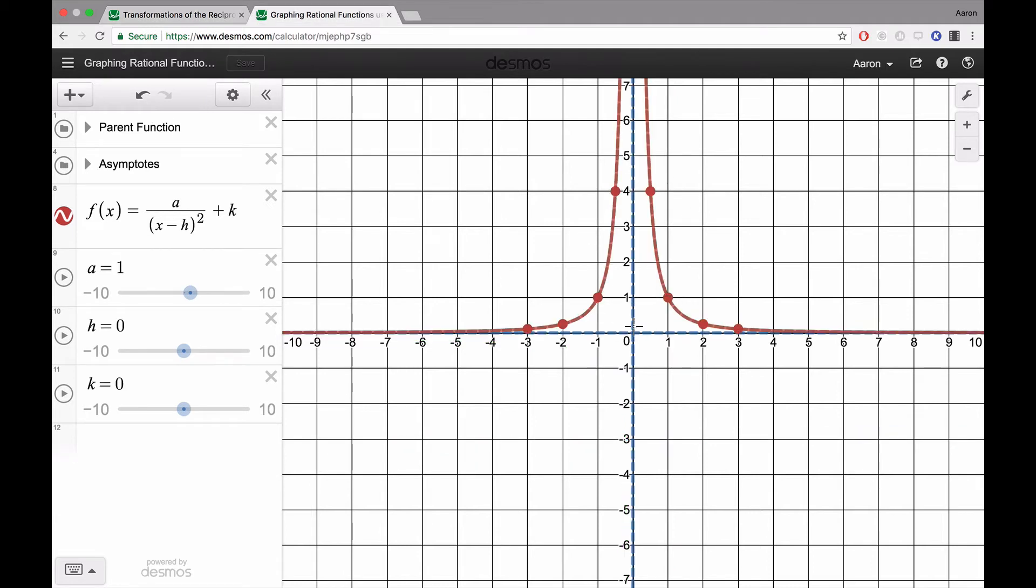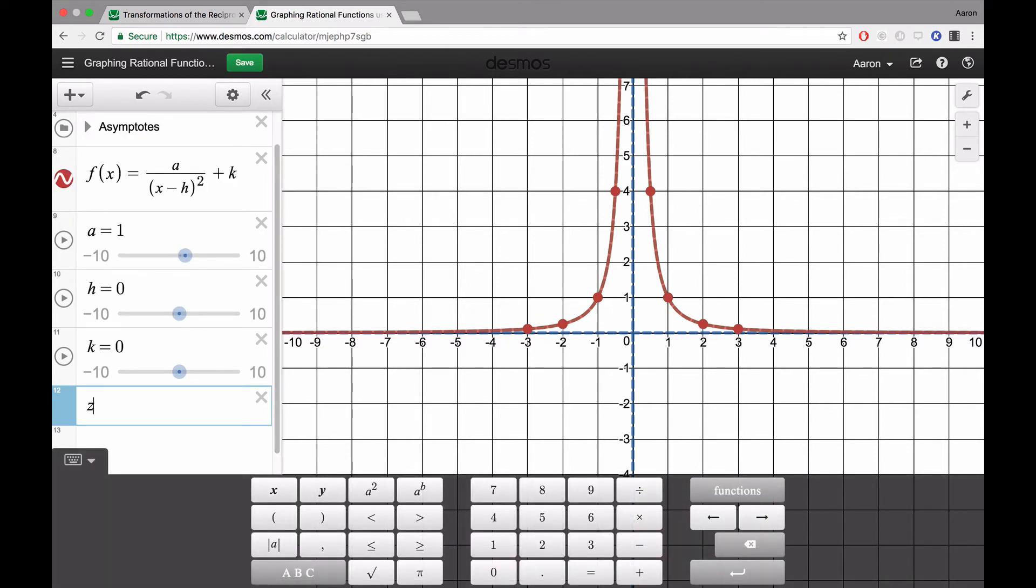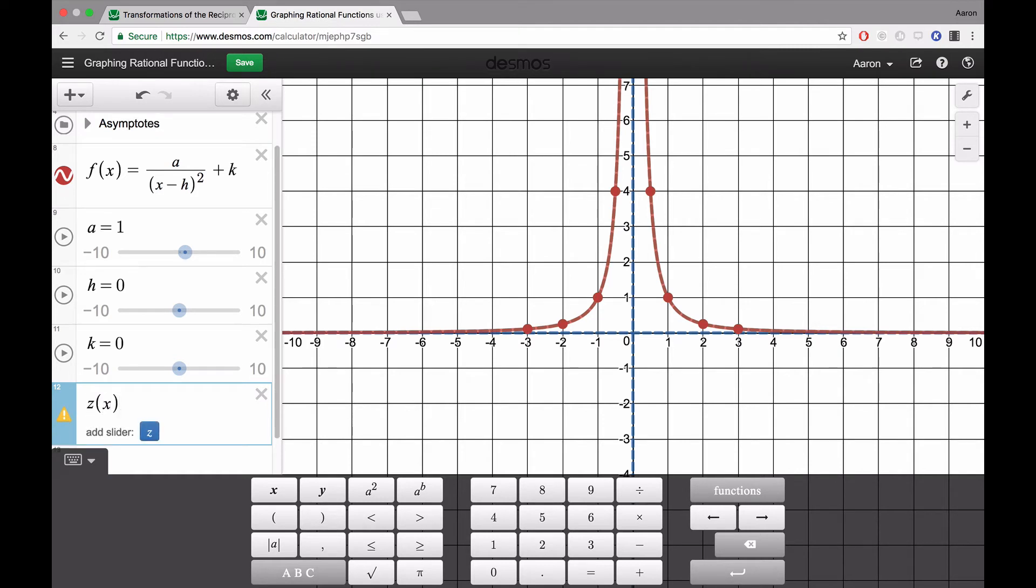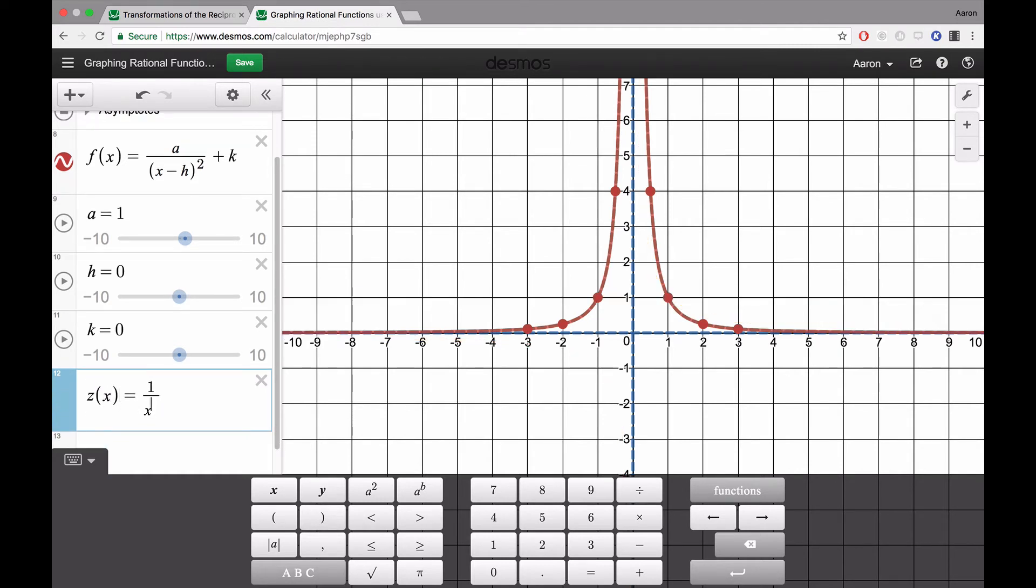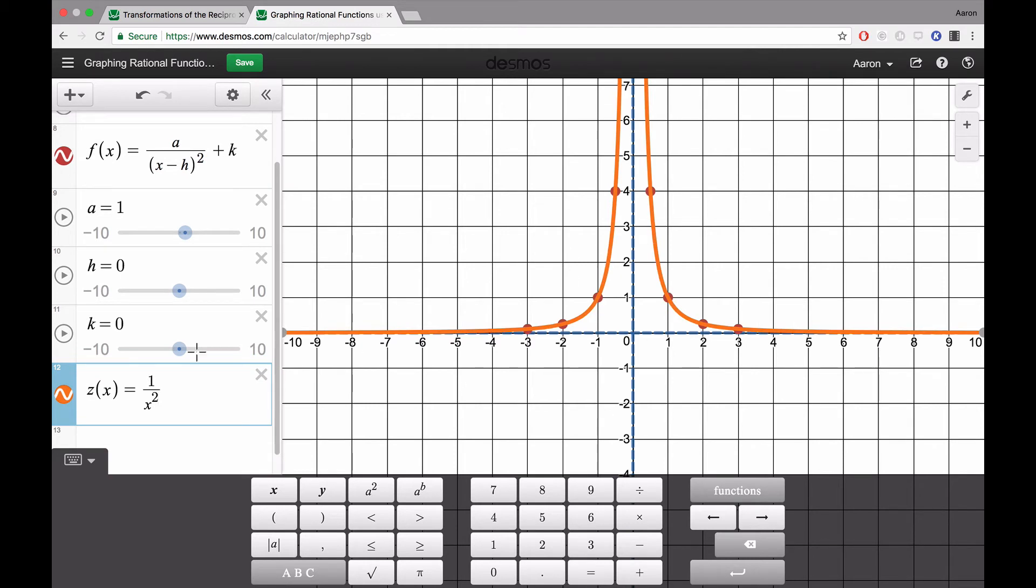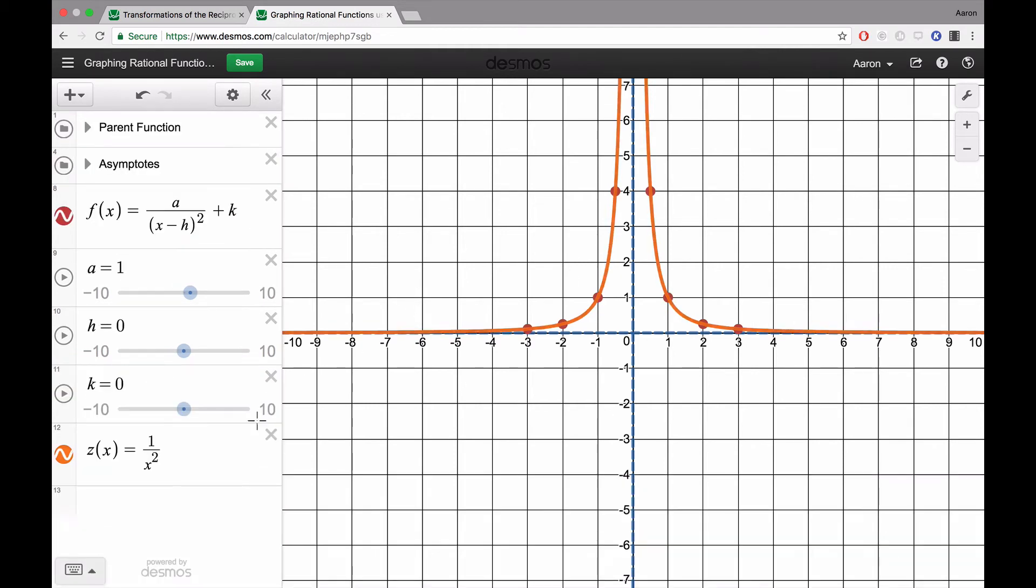Next, we're going to take a look at this function here. This is actually the function f(x) = 1/x². We can see z(x) = 1/x². It's this function here. We're going to apply these same transformations that we did to our other parent function, to the reciprocal function.